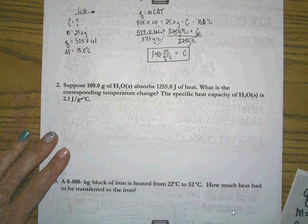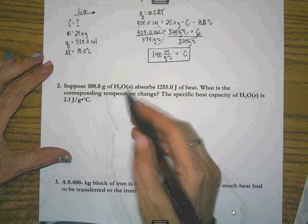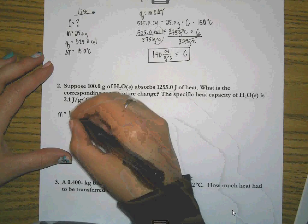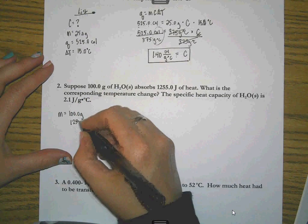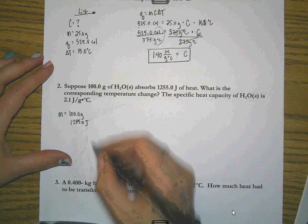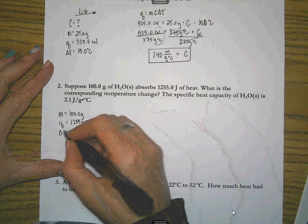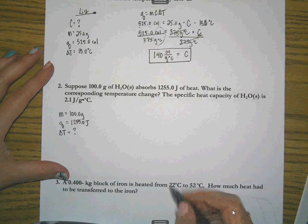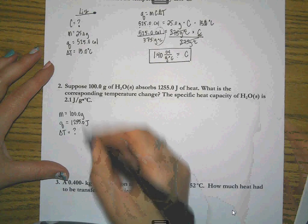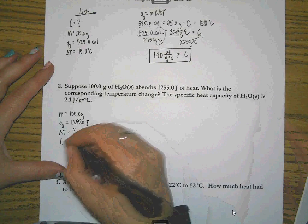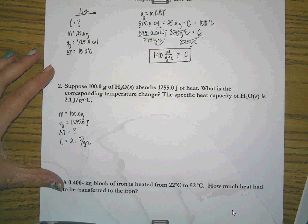Another attempt at this. All right. It says, suppose 100 grams of water. Well, for my list, mass is 100 grams. It absorbs 1255.0 joules of heat. Well, heat is Q. What is the corresponding temperature change? So what is delta T? The specific heat capacity of water as a solid is 2.1 joules per gram degree Celsius. So they've given me everything I need to solve my problem.